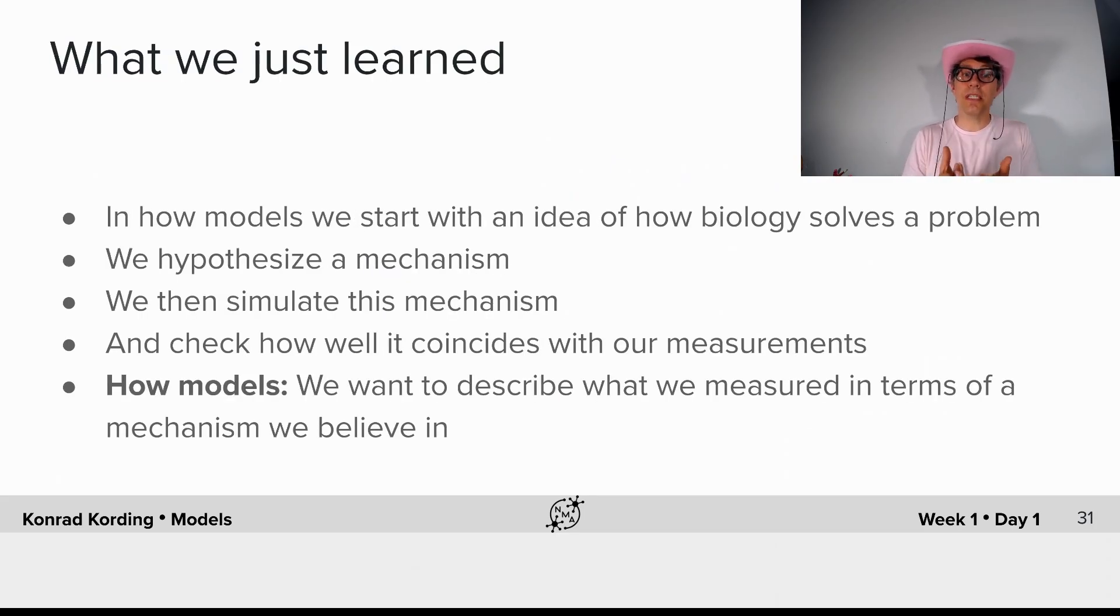So what have we just learned? In 'how' models, we start with an idea of how biology solves a problem. We hypothesize a mechanism. We then simulate this mechanism and check how well our simulation coincides with our measurements, and we can use that to iterate and make our models better. In 'how' models, we want to describe what we measured in terms of a mechanism that we can actually believe in.